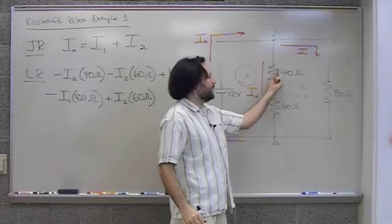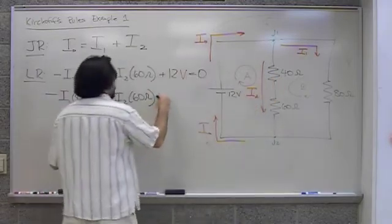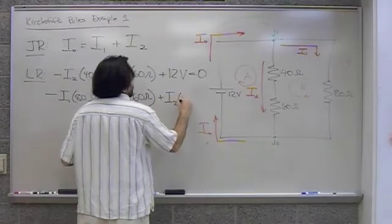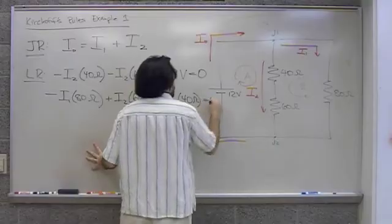I continue on up the leg. Now I get to the 40 ohm resistor and I'm traveling against the current again. So it's another positive I2 times the 40 ohm. And I get back to where I started. Equal to zero.